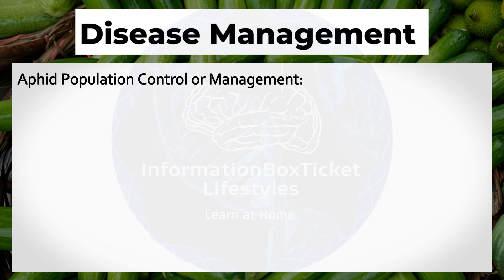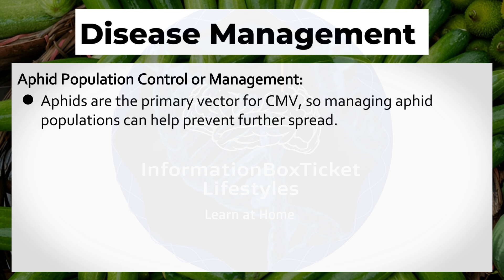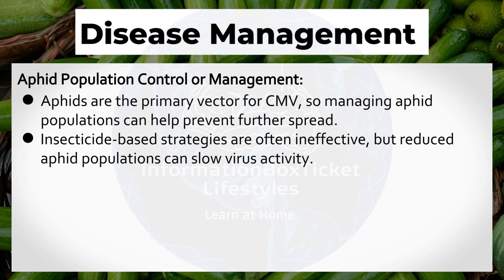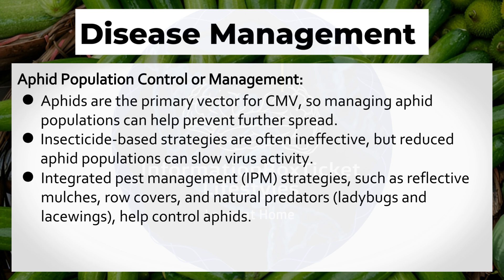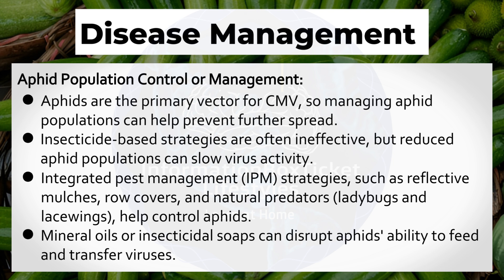Aphid Population Control: Aphids are the primary vector for CMV, so managing aphid populations can help prevent further spread. Insecticide-based strategies are often ineffective, but reduced aphid populations can slow virus activity. Integrated pest management strategies such as reflective mulches, row covers, and natural predators — ladybugs and lacewings — help control aphids. Mineral oils or insecticidal soaps can disrupt aphids' ability to feed and transfer viruses.